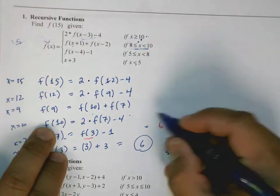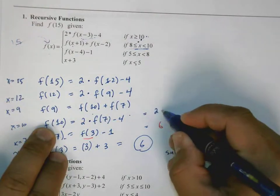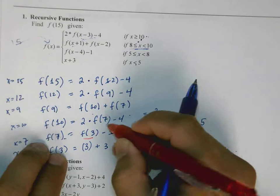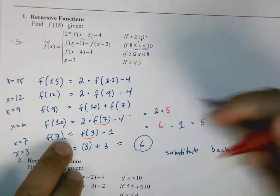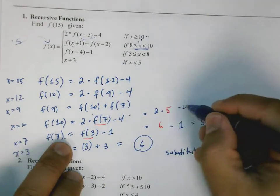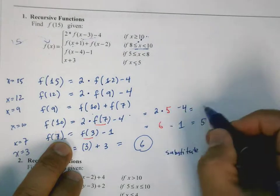f of 10 is equal to 2 times f of 7, which is 5, minus 4. So that's 10 minus 4, that's 6. Back to here,